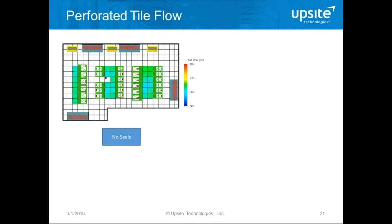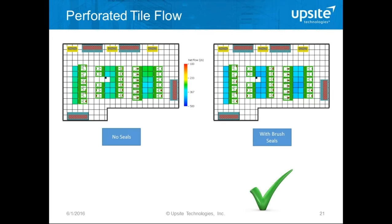Did it increase the airflow? Before seals, we had about 250 to 350 liters per second coming through the tiles. When we add the seals, more air comes through the tiles — about 350 to 450 liters per second, roughly a 30% increase. So we've increased the flow through the raised floor tiles. But what did that do for the IT?